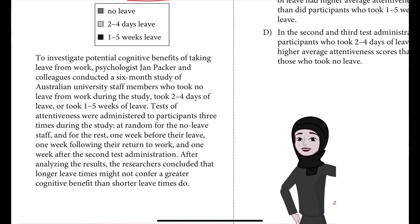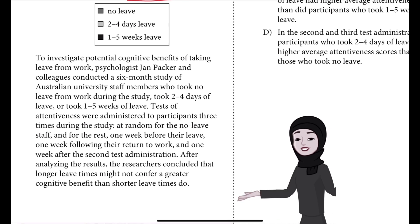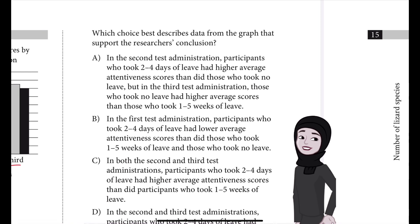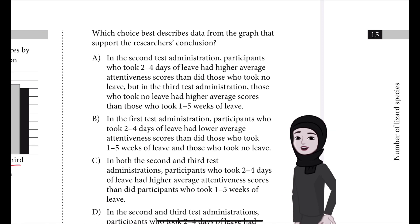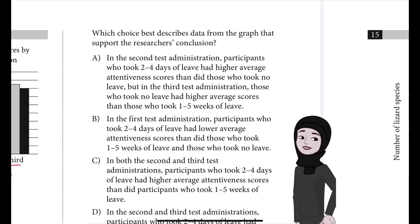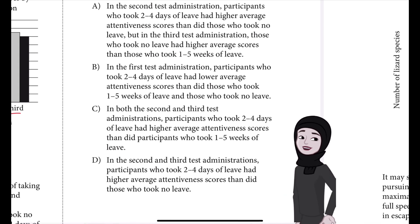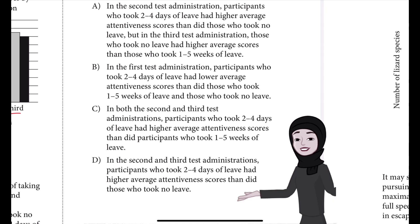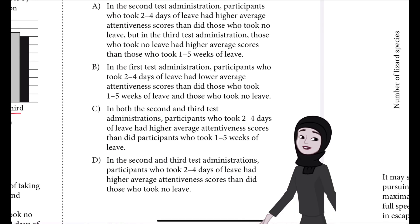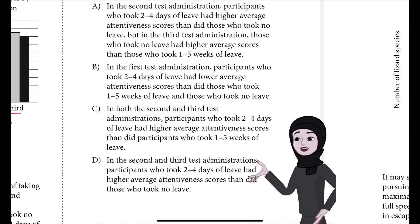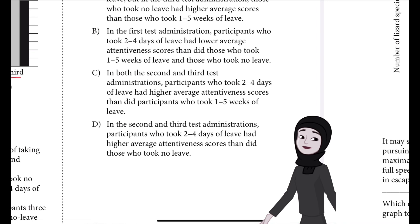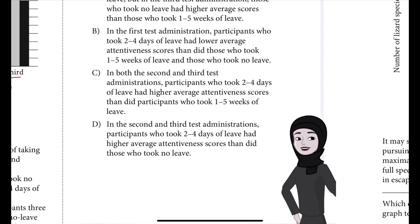After analyzing the results, the researchers concluded that longer leave times might not confer a greater cognitive benefit than shorter leave times do. Which choice best describes data from the graph that support the researchers' conclusion? A: In the second test administration, participants who took two to four days of leave had higher average attentiveness scores than those who took no leave, but in the third test, those who took no leave had higher average scores than those who took one to five weeks. B: In the first test, participants who took two to four days of leave had higher average attentiveness scores than those who took one to five weeks of leave and those who took no leave. C: In both the second and third test administrations, participants who took two to four days of leave had higher average attentiveness scores than those who took one to five weeks of leave. Or D: In the second and third test administrations, participants who took two to four days of leave had higher average attentiveness scores than those who took no leave.